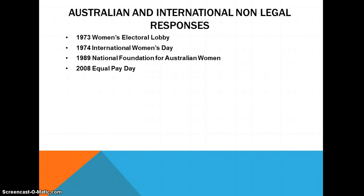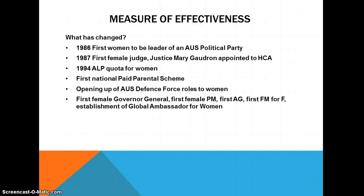Moving on to non-legal responses: in 1973, the Women's Electoral Lobby was established, aiming to influence power holders to adopt equality and improve women's position in society. In 1974, International Women's Day was officially recognized by the Australian government. In 1989, the National Foundation for Australian Women was officially launched, setting a national agenda for women's issues and giving women a collective voice. In 2008, Equal Pay Day was initiated, marking the day when women's average salary catches up to what men had earned in the previous financial year.